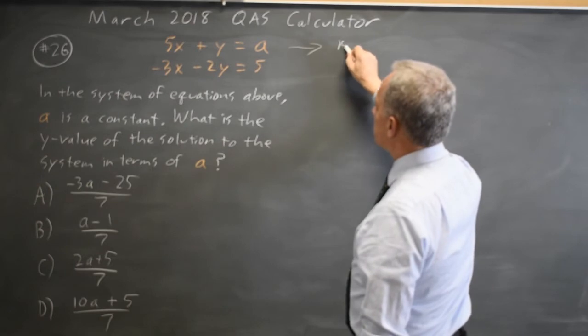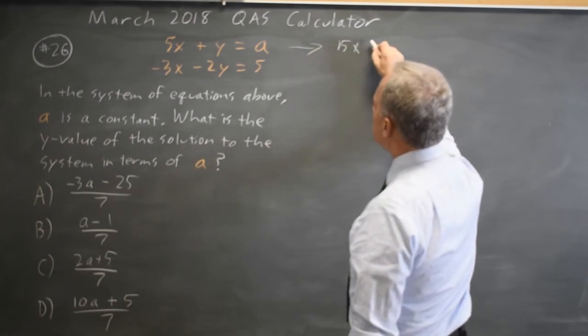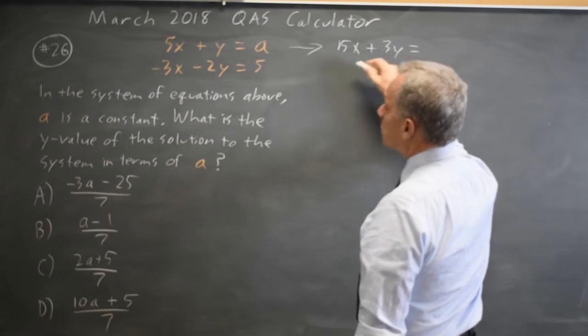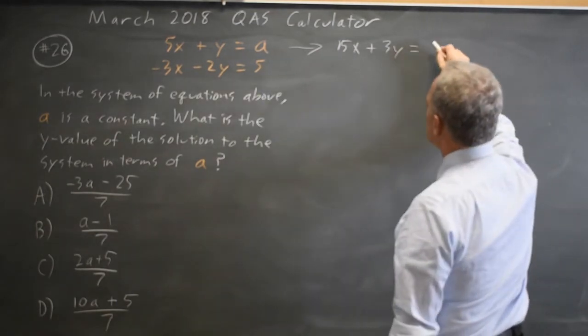So 3 times 5x is 15x, 3 times y is 3y, and I have to multiply the a by 3 also to get 3a.